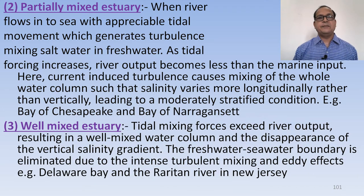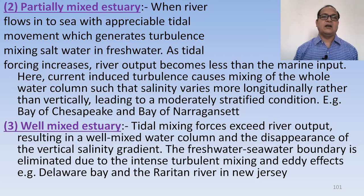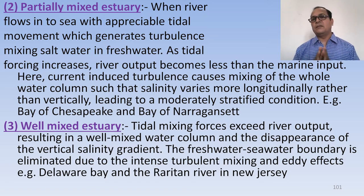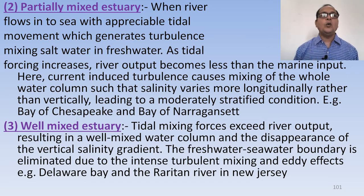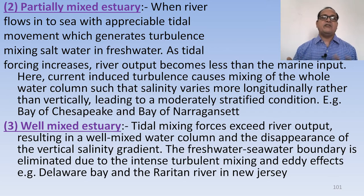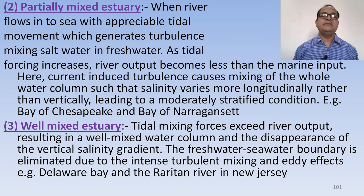The second type is the partially mixed estuary. When the river flows into the sea with appreciable tidal movement, it generates turbulence mixing sea water into fresh water. As tidal force increases, river output becomes less than marine output. Current-induced turbulence causes mixing of the whole water column such that salinity varies more longitudinally than vertically, leading to a moderately stratified condition. Examples include Chesapeake Bay and Narragansett Bay.